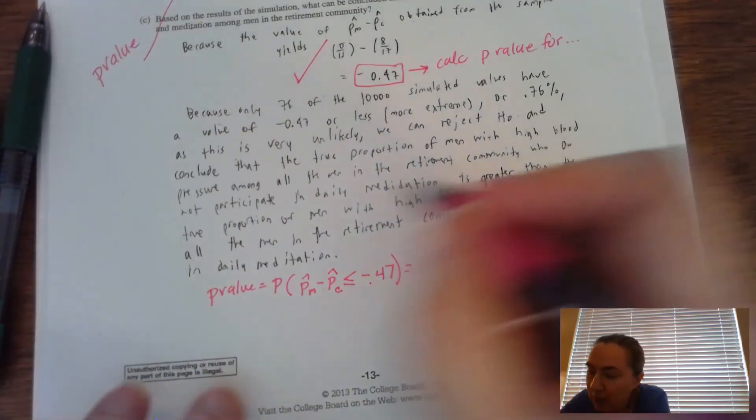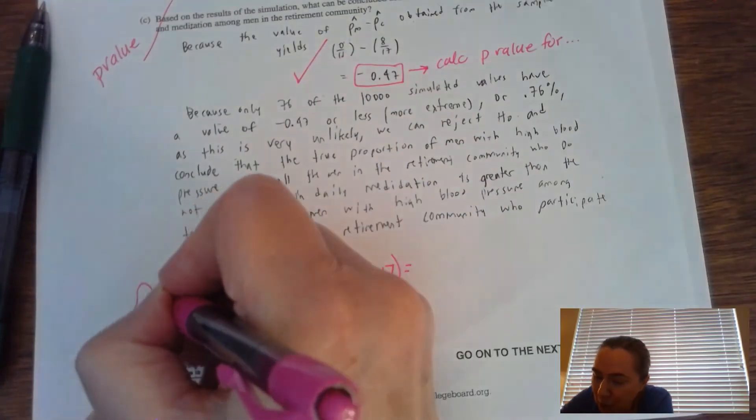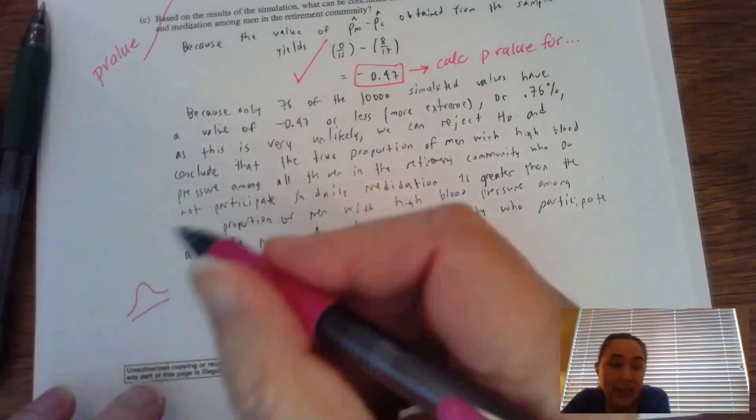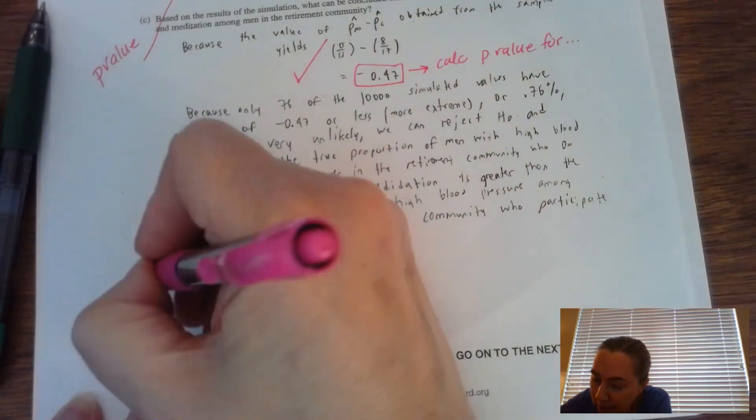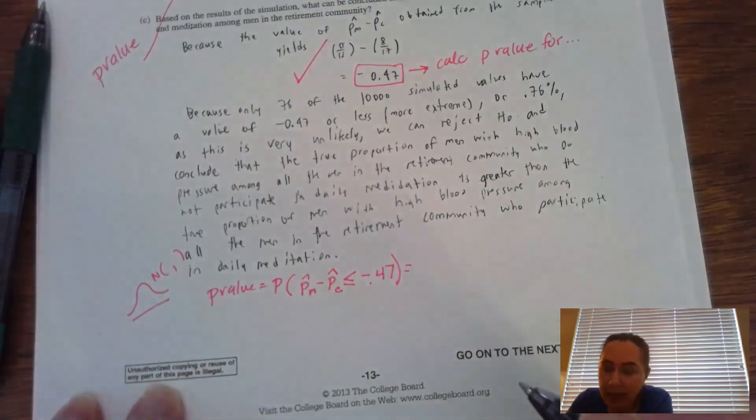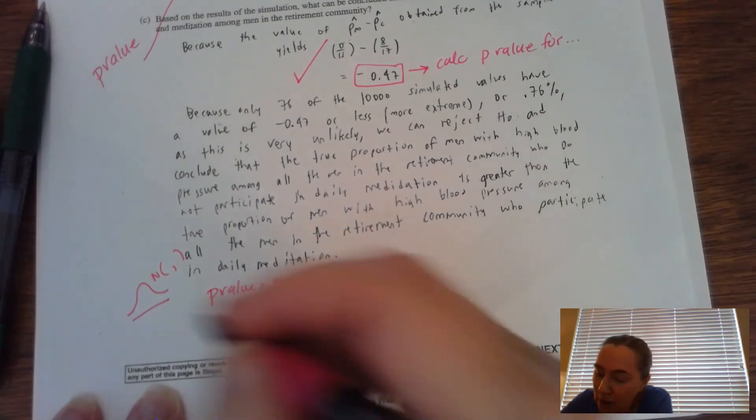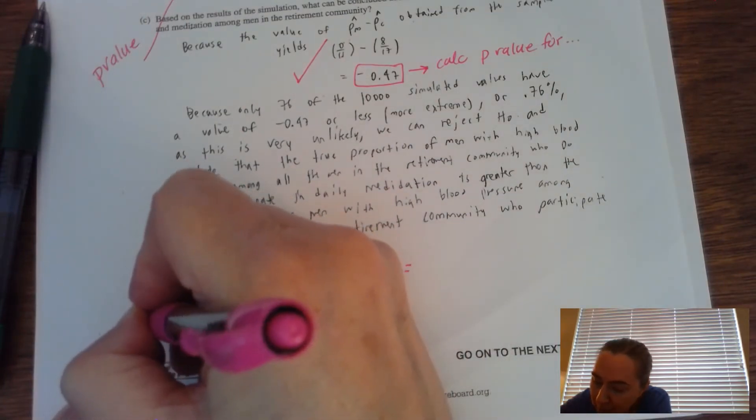So we have, it's sort of like we have a pseudo normal model that we got simulated wise. It has a mean and a standard deviation associated with it. Our sample result is negative 0.47. And remember this area right there corresponds to the P value that we're looking for.